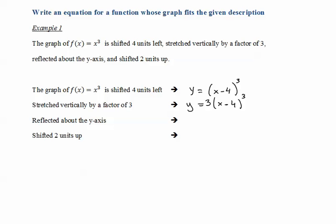The next step is to reflect about the y-axis. Reflecting about the y-axis means that for every x, it becomes a negative x. So we switch y = 3(x - 4)³ to y = 3(-x - 4)³. This gives us a reflection with respect to the y-axis.